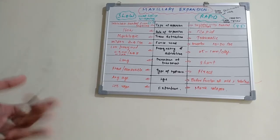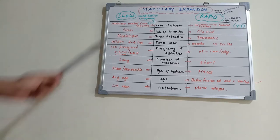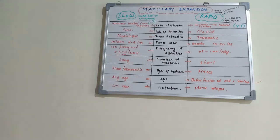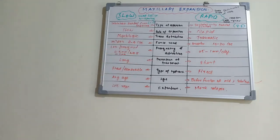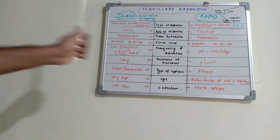Hello everyone, welcome back to a new session on dentistry and more. Today we have an orthodontic topic: maxillary expansion. We can expand the maxilla using two methods — one is slow and one is rapid. Let's see what the basic differences are between slow maxillary expansion and rapid maxillary expansion. We have nine parameters to compare.